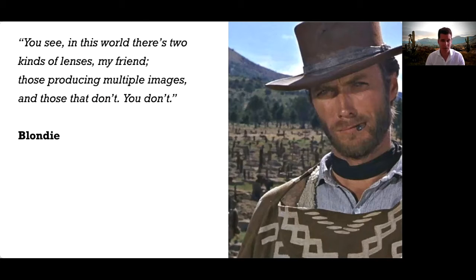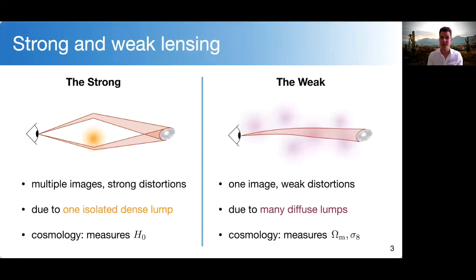What Blondie is trying to say here is that we traditionally distinguish between two different regimes of gravitational lensing — namely strong lensing on the one hand and weak lensing on the other hand. These two regimes differ in various aspects. From the observational point of view, strong lensing produces multiple images with very strong distortions with respect to the intrinsic shape of the source, while weak lensing preserves the integrity of the sources by producing only a single image with only weak distortions.